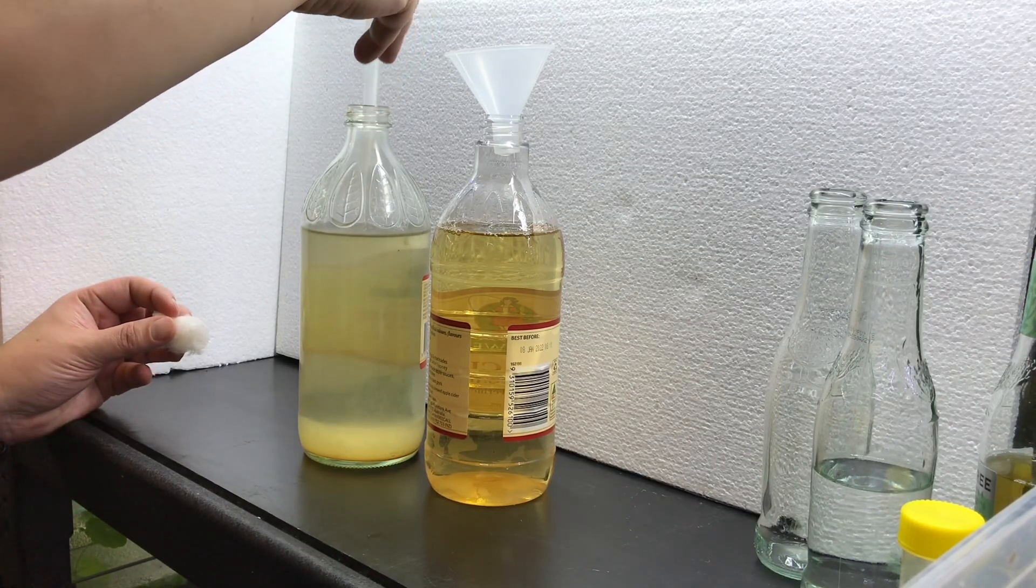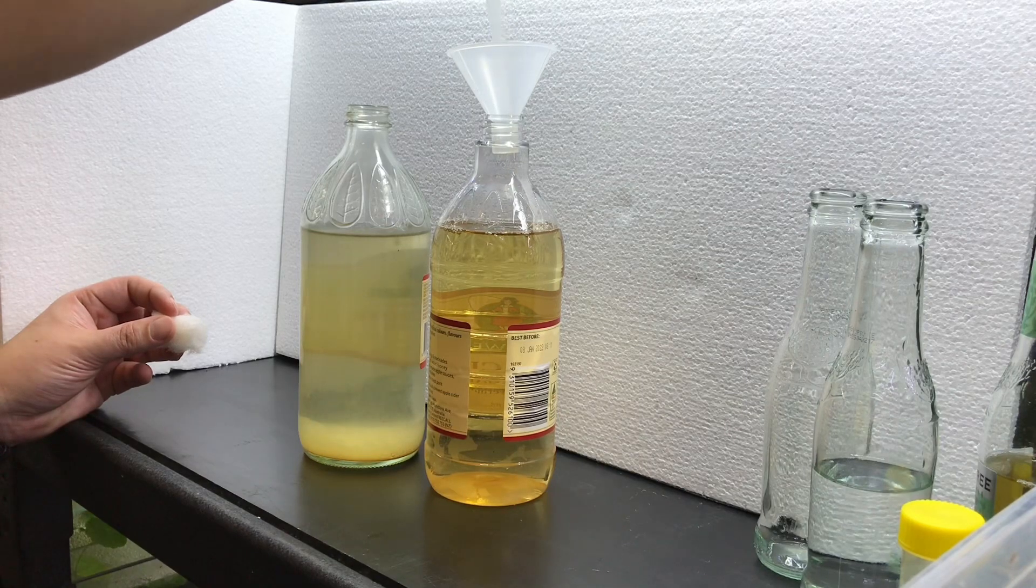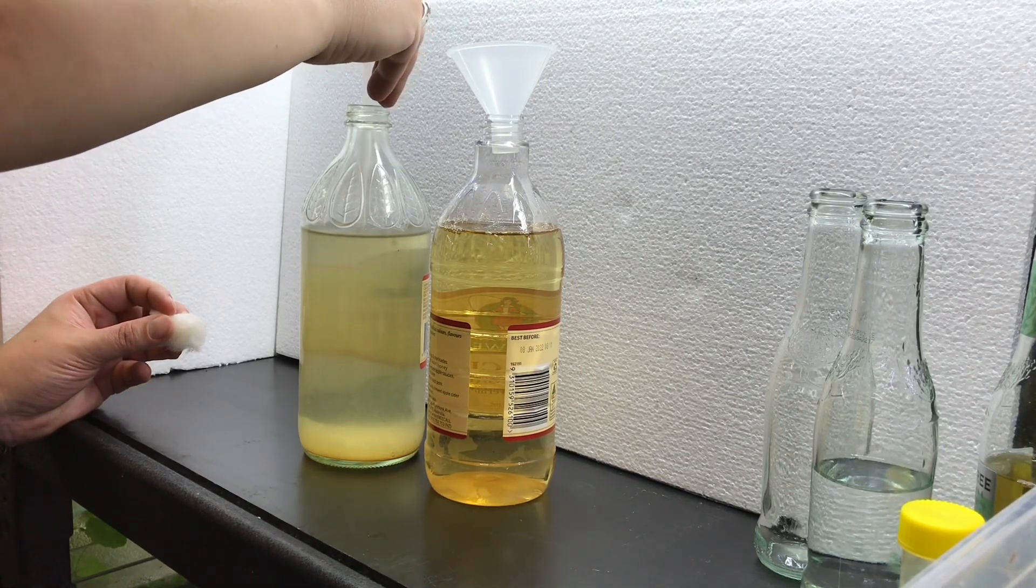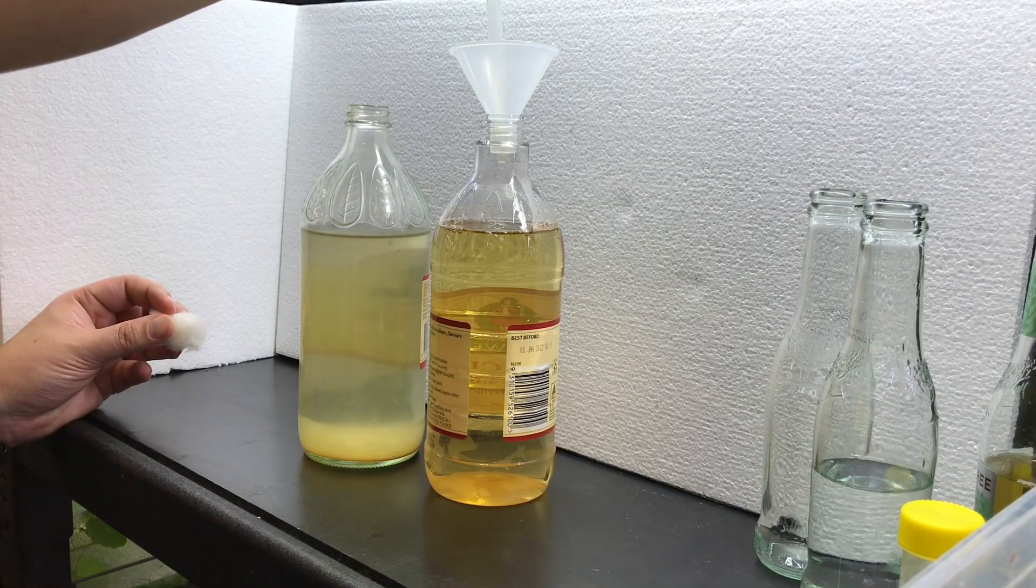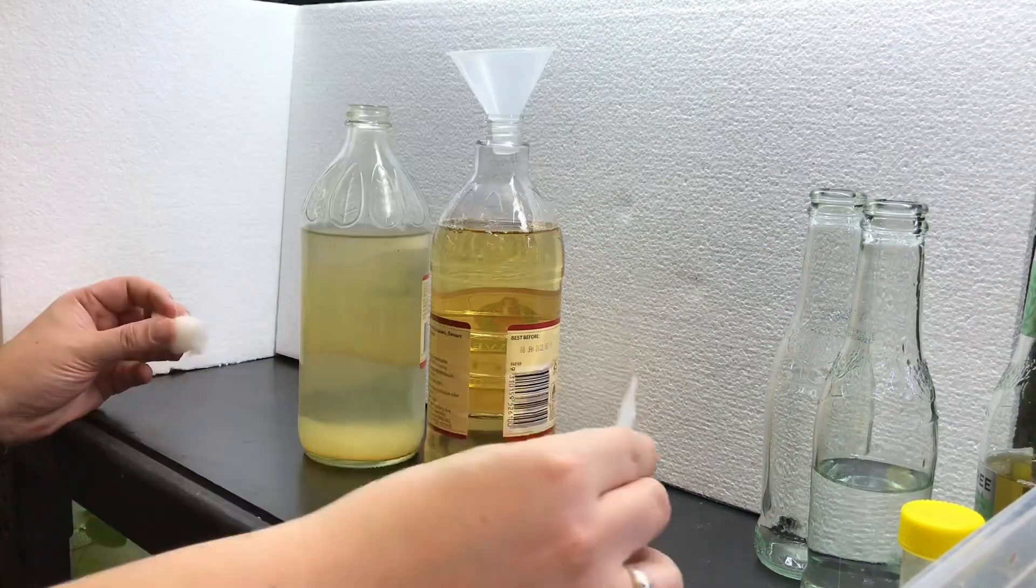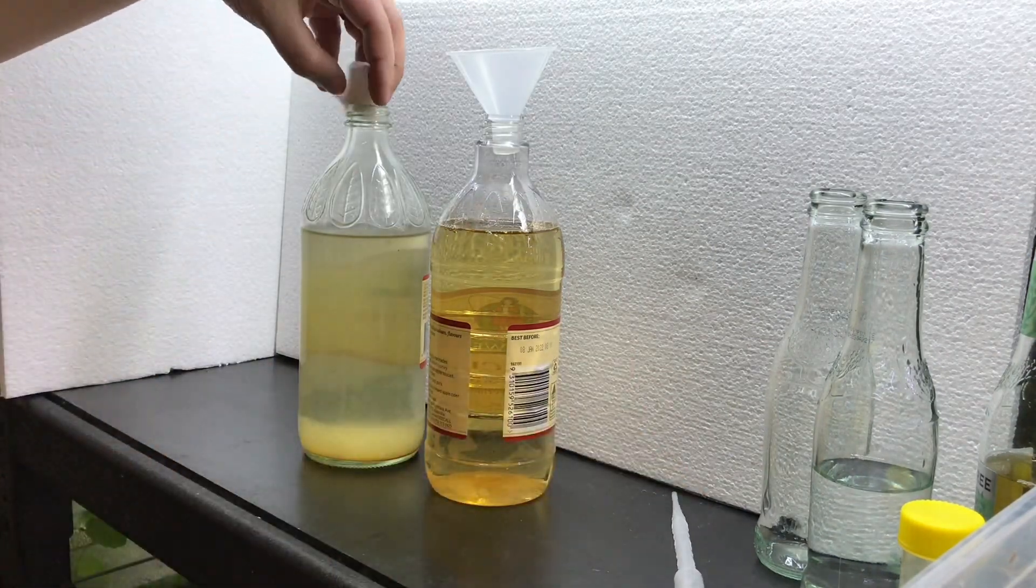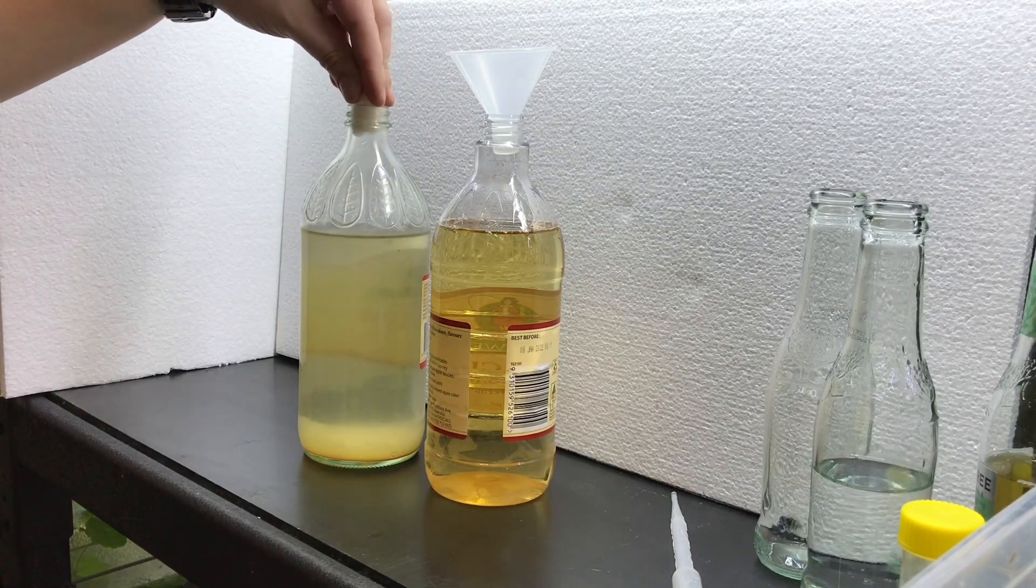To start a new culture all you have to do is get some vinegar eels from your established culture into the new culture, and just two little pipettes worth is more than enough and the new culture is set up ready to go.